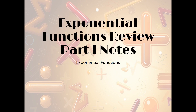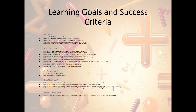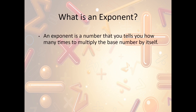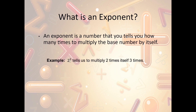Let's take a look now at the Exponential Functions Review Part 1 notes. The notes begin with the Learning Goals and Success Criteria. Now, what is an exponent? An exponent is a number that tells you how many times to multiply the base number by itself. So, for instance, we have 2 to the third power. 2 is what we call our base number, and it tells us that we're going to multiply 2 times itself 3 times. So that's really 2 times 2 times 2, which is 8.